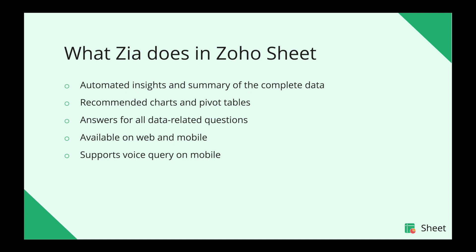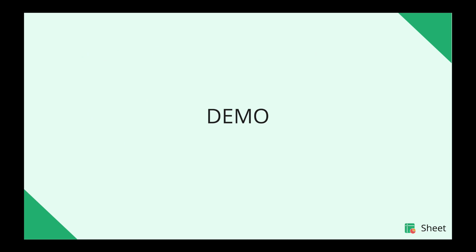What does Zia actually do in Zoho Sheet? No matter how huge your data is, Zia gives you the complete summary of your data along with automated insights in a single click. This complete summary also consists of recommended charts and pivot tables which you can easily drag and drop into your spreadsheet to build reports in an instant. You can even ask data-related questions to Zia in plain English and get answers. Zia is also available for mobile applications with an added advantage of voice queries.